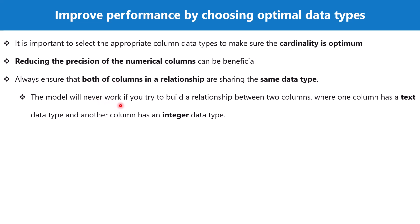These are the key points to remember for improving model performance by choosing the optimal data type. By choosing the optimal data type you ensure that cardinality is optimum, the model works to the best of its performance capabilities, its size is reduced, and all of these factors contribute to the overall experience and model performance inside Power BI. That's all for this video — see you in the next one.